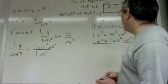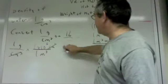Now we have grams per cubic meter — we're halfway there. We want pounds per cubic meter, so we need to convert grams to pounds. I don't know how many grams are in a pound directly, so let's go through kilograms. One kilogram equals 1,000 grams. To cancel out grams, we put one kilogram on top and 1,000 grams on the bottom — grams over grams cancels. Now we have kilograms per cubic meter.